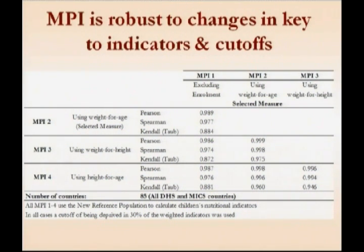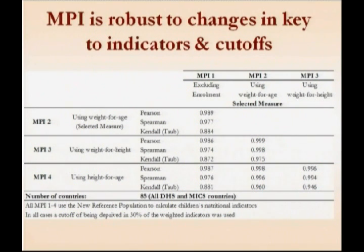With respect to changes in indicator cut-offs and the indicators themselves: in the reported measure we used underweight as the nutritional measure for children, but we also calculated the MPI using weight for height and height for age — wasting and stunting rather than underweight. The MPI estimates vary; in general, when we use stunting, the MPI tends to be higher. But the question is not so much whether the value itself varies, but whether the rankings of countries change. We performed basic correlations between those different country rankings and found that the correlations are pretty high — above 0.87 with three different correlation coefficients.